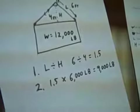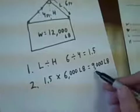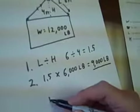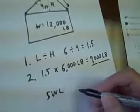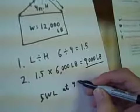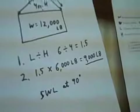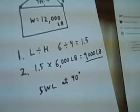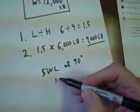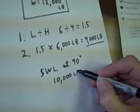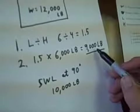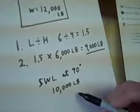So the last thing we have to do is compare the nine thousand pounds with the safe working load on the tag of the strap at 90 degrees. So in our case, 9,000 pounds—if the safe working load at 90 degrees was 10,000 pounds, this would be a safe lift because the force is not more than the rating of the safe working load.